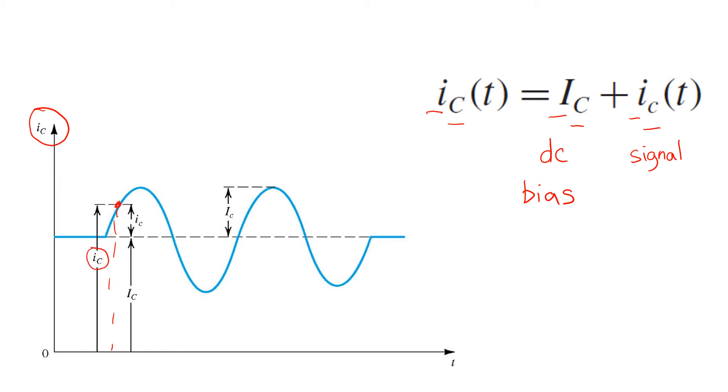And it's composed of the sum of the DC bias, uppercase i, uppercase c, and the signal component lowercase i, lowercase c.